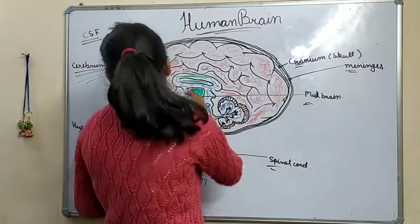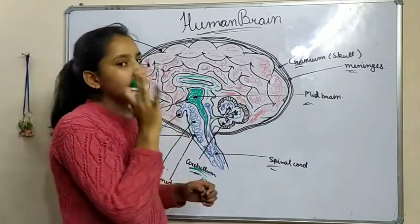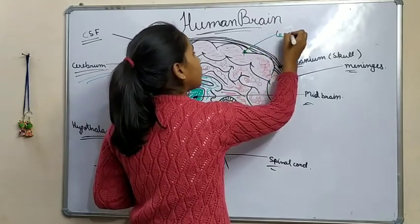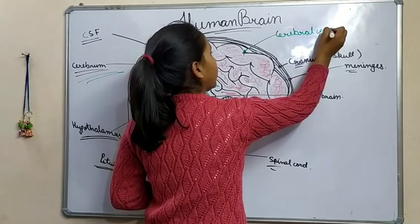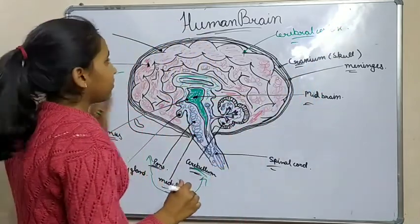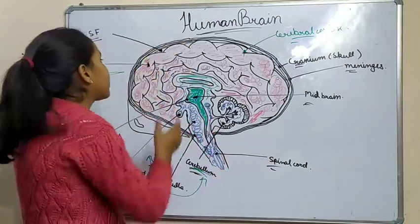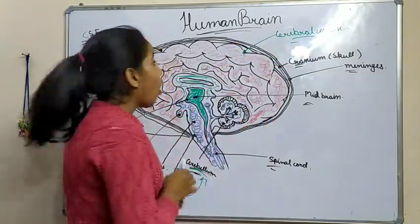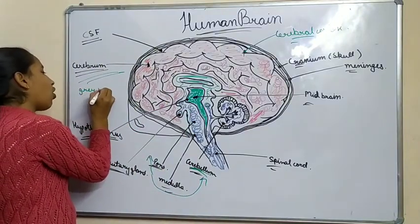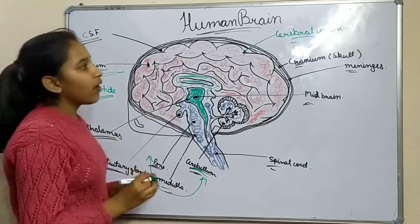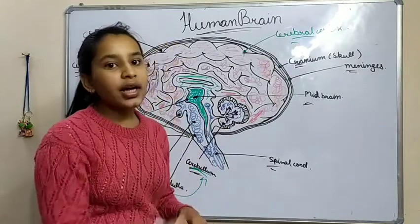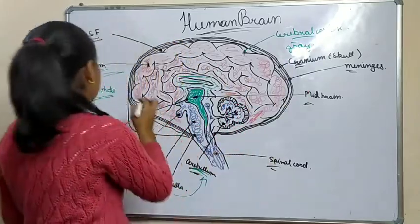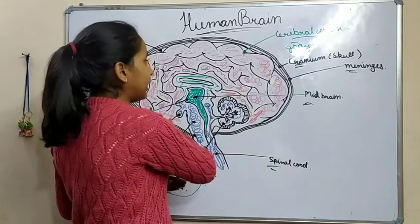The outer layer of the cerebrum is covered by the cerebral cortex. Now let us see the difference between cerebrum and cerebral cortex. Cerebrum is present in the largest part of our brain, but the cerebral cortex is the outer lining above it. Cerebrum is made up of grey and white matter, whereas the cerebral cortex is entirely made up of grey matter. Cerebrum is divided into two hemispheres — right hemisphere and left hemisphere.